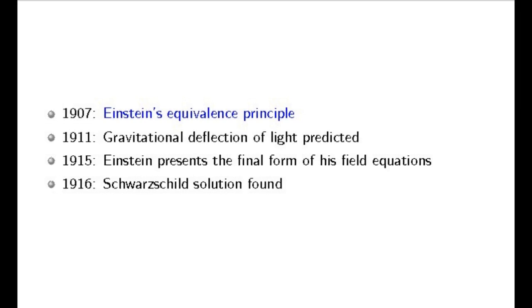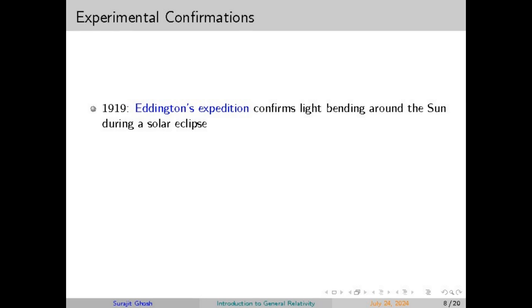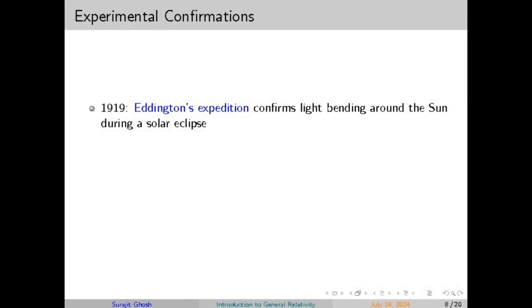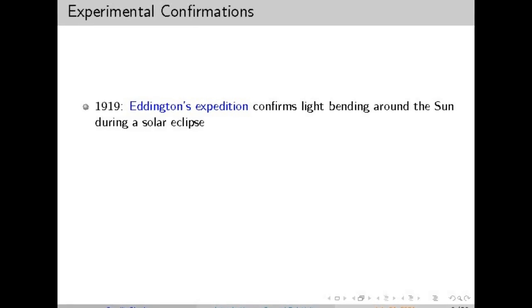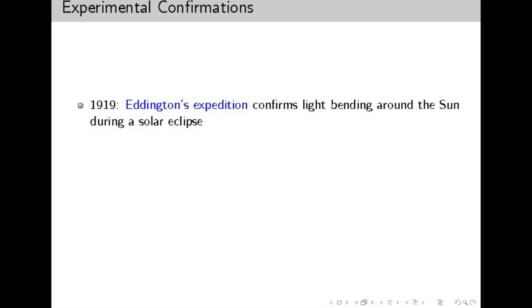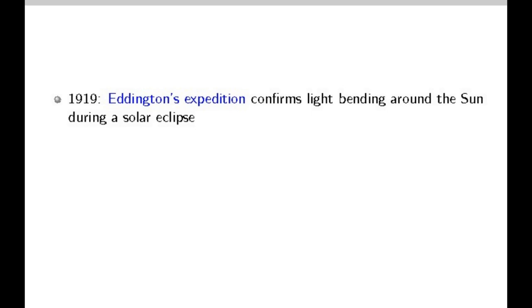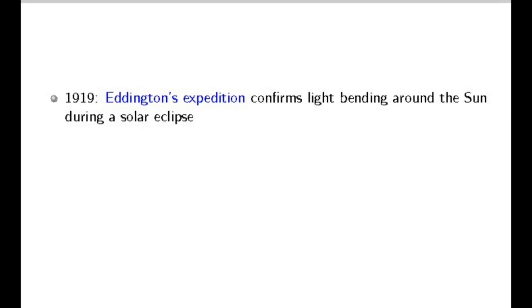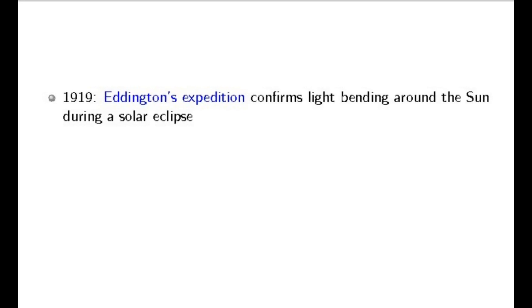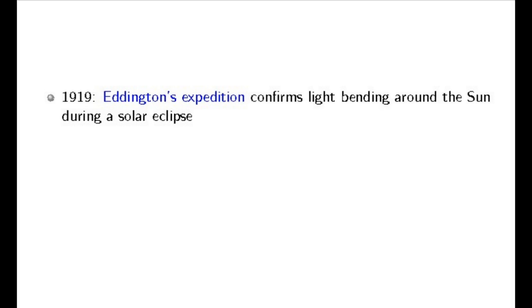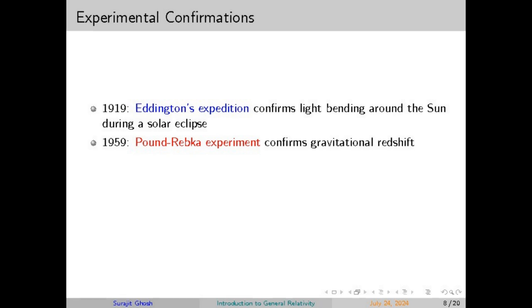The curvature of spacetime is described by various curvature tensors. One important tensor is the Ricci curvature tensor, which measures how much spacetime is stretched or compressed in different directions. Another related concept is the scalar curvature, which provides a single value representing the overall curvature of spacetime at a specific point. Einstein's equations relate these curvatures to the matter and energy present in the universe — essentially, the way spacetime curves depends on the amount and distribution of matter and energy. Massive objects like stars and black holes create deep wells in this fabric, while lighter objects create smaller ripples.